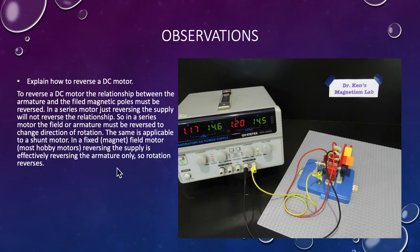Explain how to reverse a DC motor. To reverse a DC motor, the relationship between the armature and the field magnetic poles must be reversed. In a series motor, just reversing the supply will not reverse the relationship. In a series motor, the field or the armature must be reversed to change the direction of the rotation. The same is applicable to a shunt. In a fixed magnet field motor that most hobbyists use, reversing the supply is effectively reversing the armature only. So the field doesn't get reversed, so you get reverse rotation.